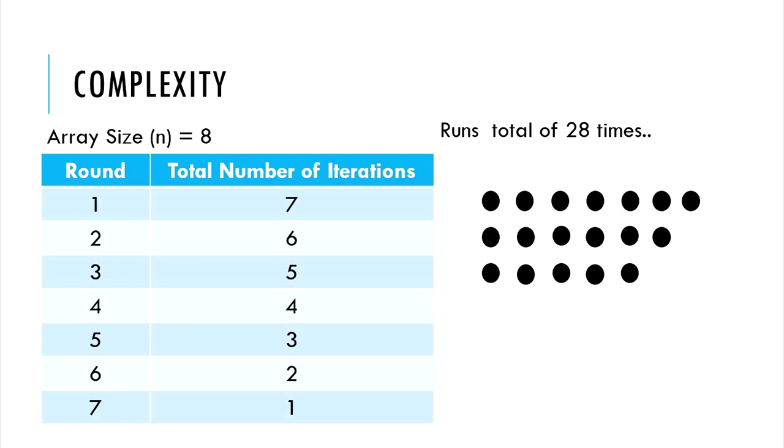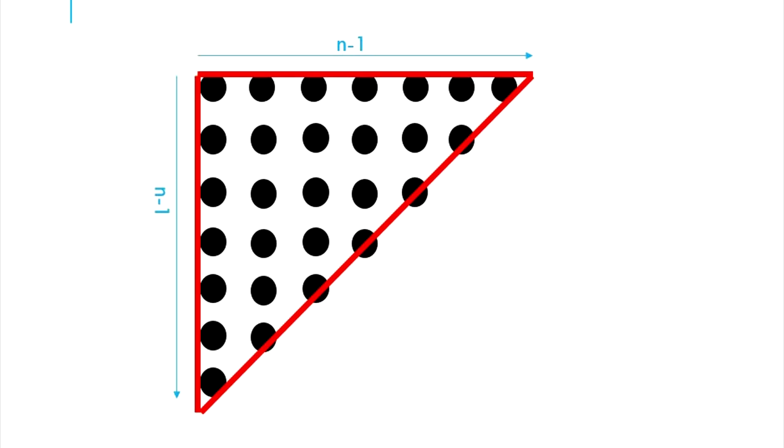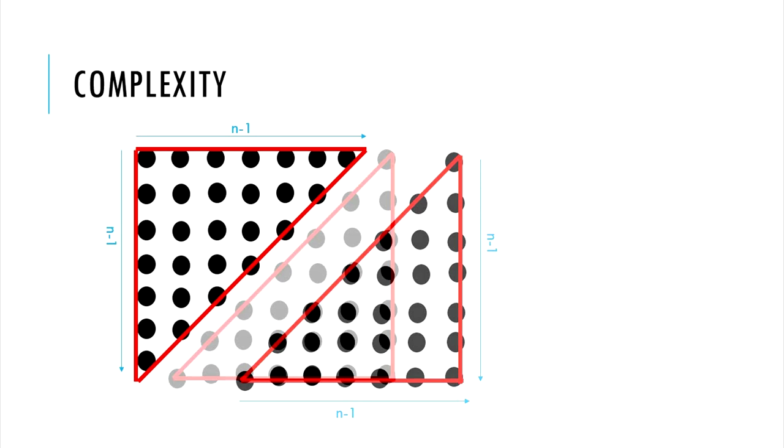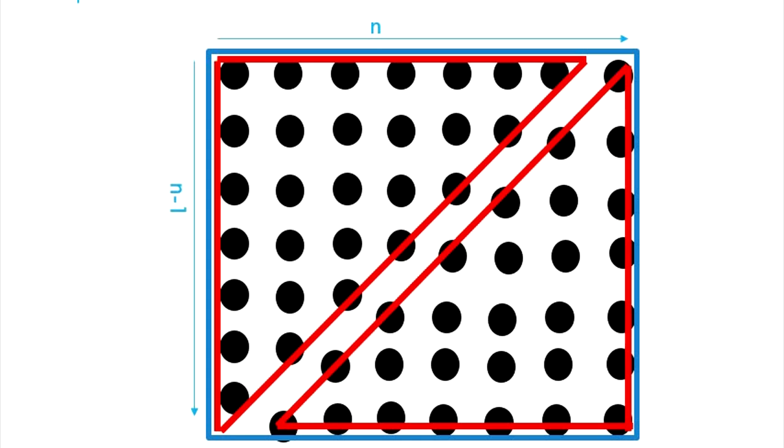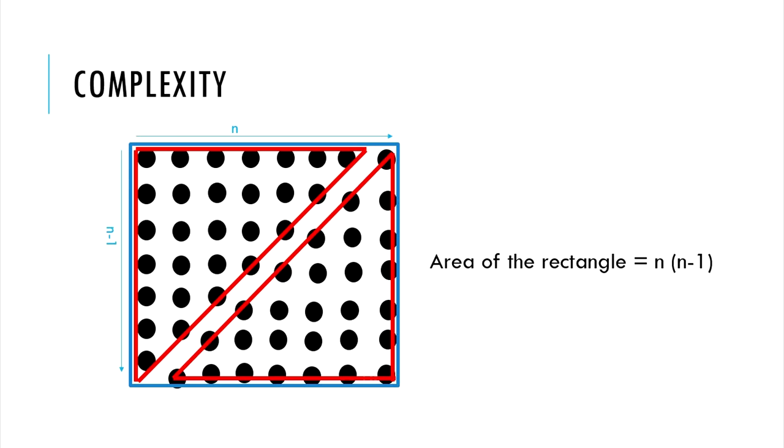Voila! These dots are assuming a shape of a right-angled triangle. Let's bring a transformed triangle with exactly the same number of dots and join these two together. What do we get? A rectangle made of the dots with length of n and width of n-1. Obviously, the area of this rectangle is n times n-1, which means that it is composed of n times n-1 dots.